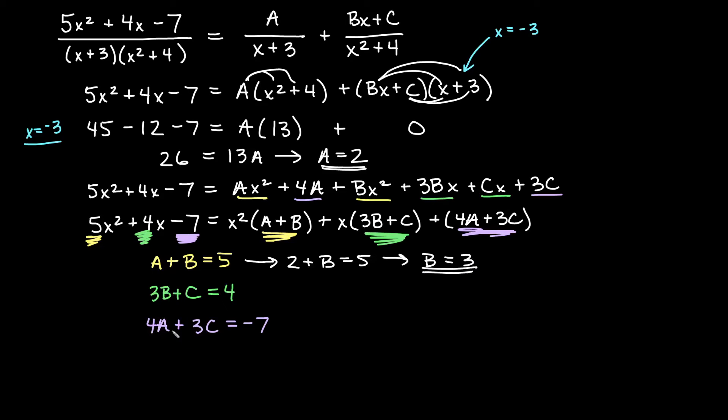I could use the next one or I could use this one here. I'll just use the third one. I think in one of the previous videos I used the first and the second so I'll just use this one. So if I plug in A equals 2 then that would give me 8 plus 3C is equal to negative 7. If I subtract 8 on both sides that would give me that 3C is equal to negative 15. And if I divide by 3 then that would give me that C is negative 5.